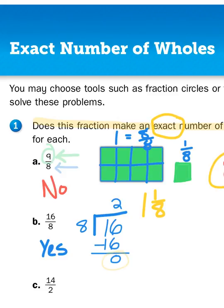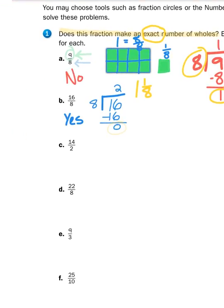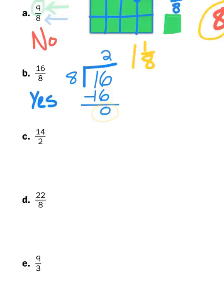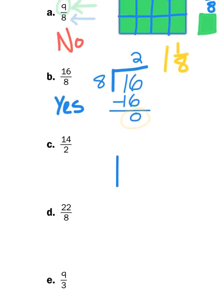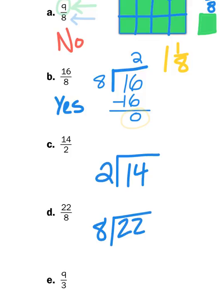And that's how you do it. You basically have to divide the numerator, the top number, by the denominator. So, to set up problem 1c, in order to solve, is there enough halves in 14? I would have to divide 14 by 2. Is there enough 8ths in 22? I would have to divide 22 by 8. And so on.